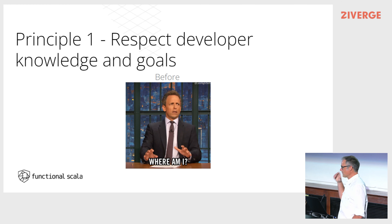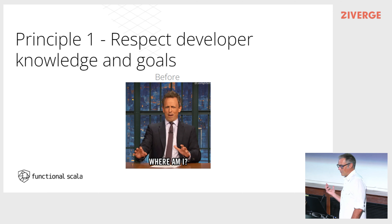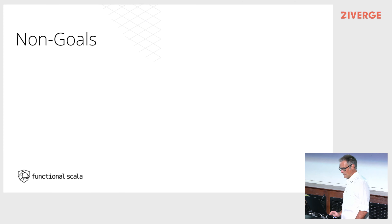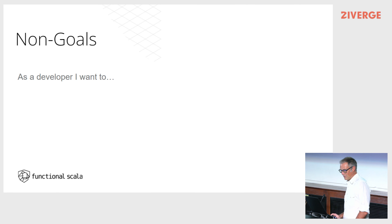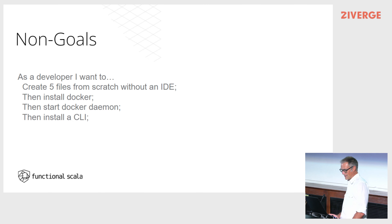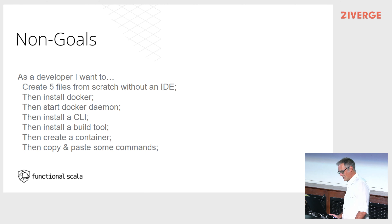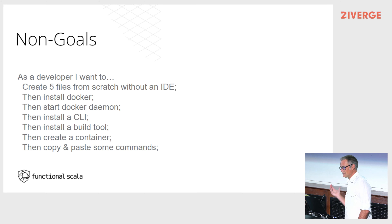Principle one: respect the developer's knowledge and goals. When building developer experiences, we need to think about who we're building them for and what their goals are. Oftentimes we think about the steps a developer needs to take rather than what they're actually trying to accomplish. For example: as a developer, I want to create five files from scratch without an IDE, install Docker, start the Docker daemon, install a CLI, install a build tool, create a container, copy and paste some commands.